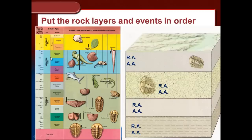What we've been studying is putting layers in order based on the principles of stratigraphy. In this cross section, we already know that the things on the bottom are the oldest and the things on top are the youngest, based on the law of superposition. But what we don't know is really how old these layers actually are.